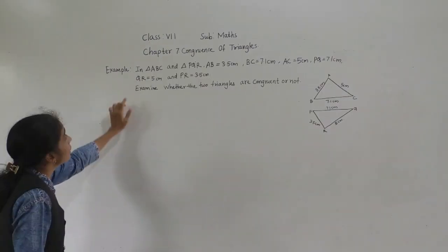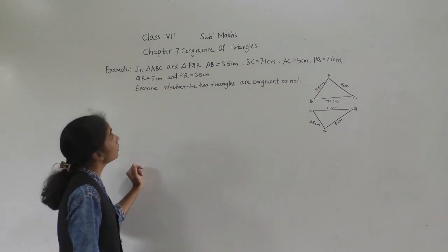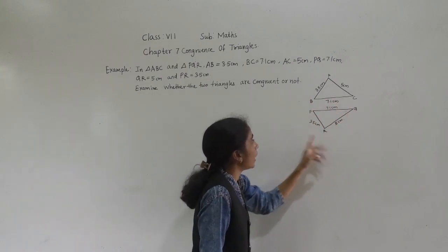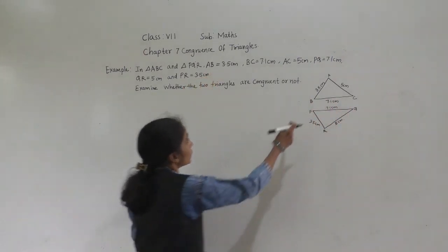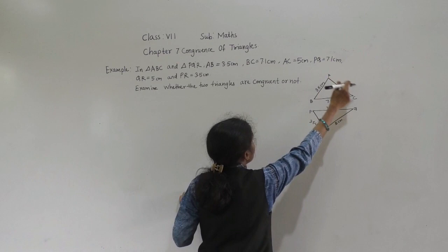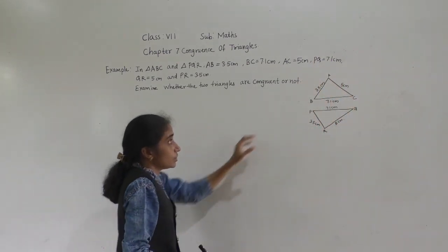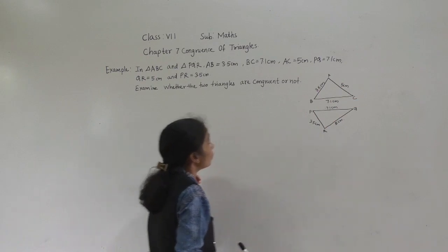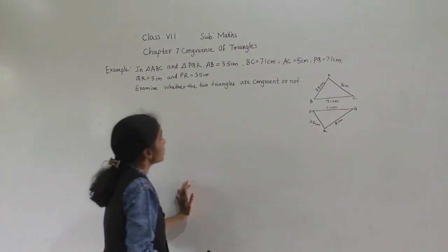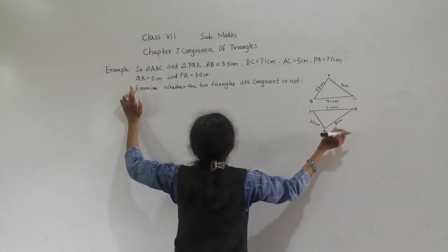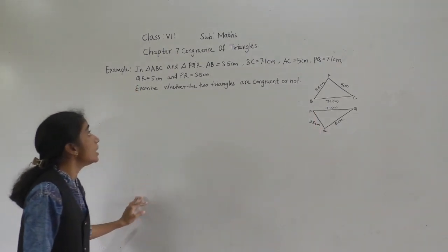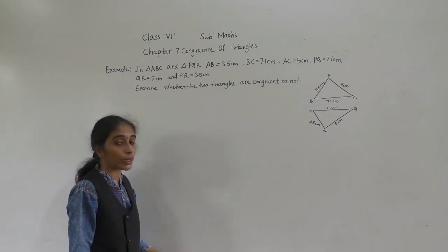Let's learn an example. In triangle ABC and triangle PQR: AB is equal to 3.5 cm, BC is equal to 7.1 cm, and AC is equal to 5 cm. This is given for triangle ABC. PQ is equal to 7.1 cm, QR is equal to 5 cm, and PR is equal to 3.5 cm. Examine whether the two triangles are congruent or not.